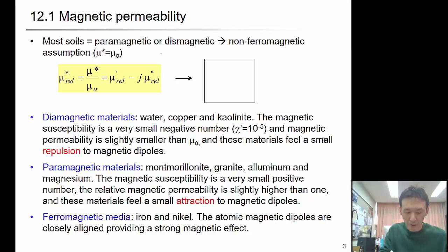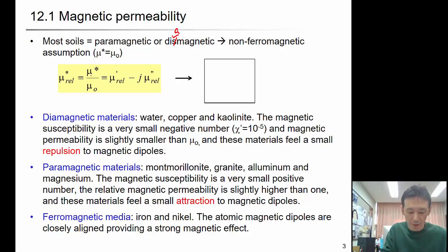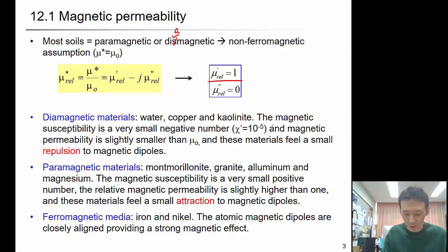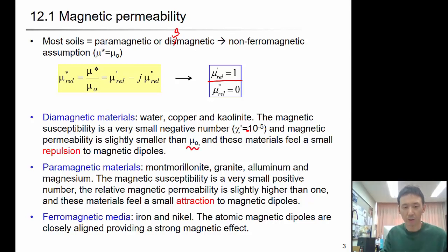Most soils are paramagnetic or diamagnetic, and it can be assumed non-ferromagnetic material. So when you look at the relative magnetic permeability — that's the magnetic permeability divided by the magnetic permeability of free space — the real value of the relative magnetic permeability is 1 for non-ferromagnetic material, and the imaginary value will be 0. Diamagnetic material includes water, copper, and kaolinite, and the magnetic susceptibility is a very small negative number, so the magnetic permeability is slightly smaller than the value of free space. This material feels a small repulsion to magnetic dipoles.